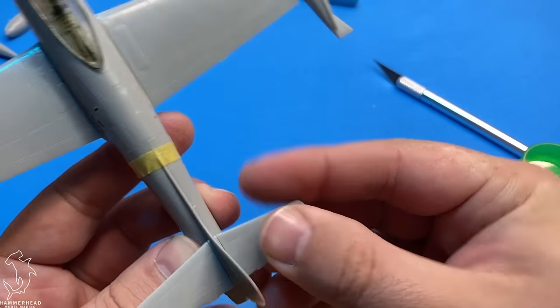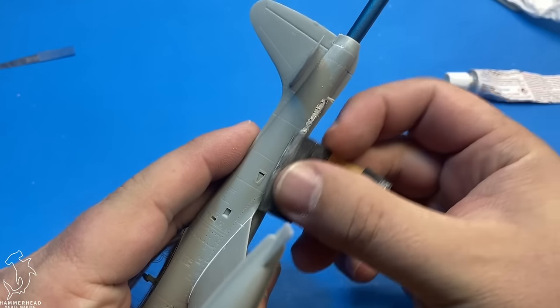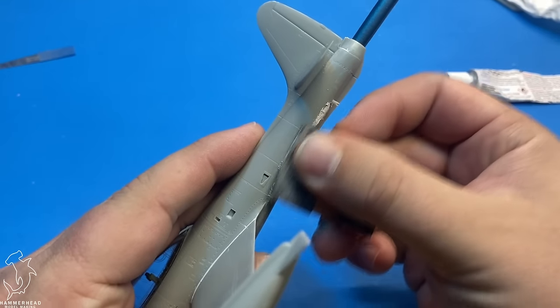Here we can do the upper halves of the wingtip fuel tanks. And finally, the horizontal stabilizers. Now, in hindsight, I should have left these off. And you'll see why later, but hindsight 2020 and all that.